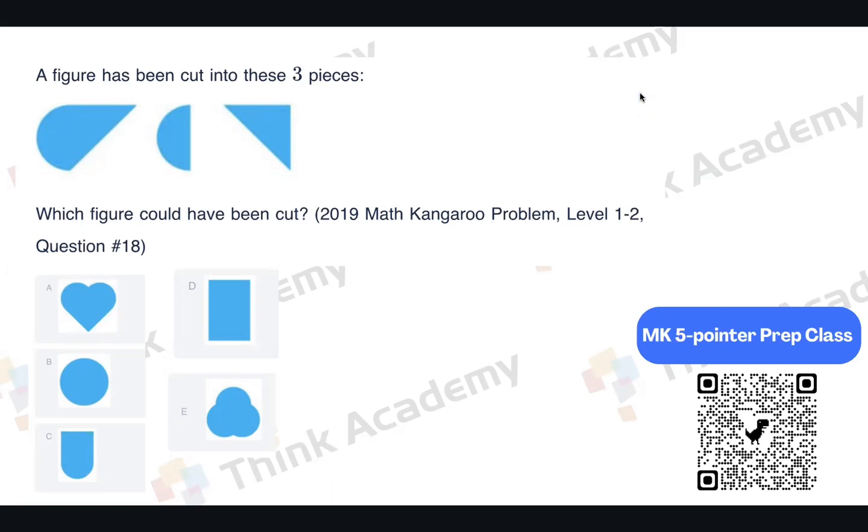A figure has been cut into three pieces, and I want to know what is that figure. So let's first take a look. Is it special? Yes, we have a water drop and a semicircle and a triangle. So to find the original figure, we just need to combine them together.